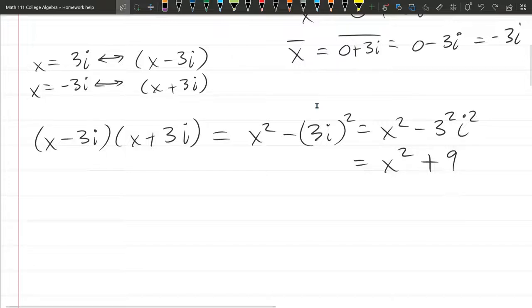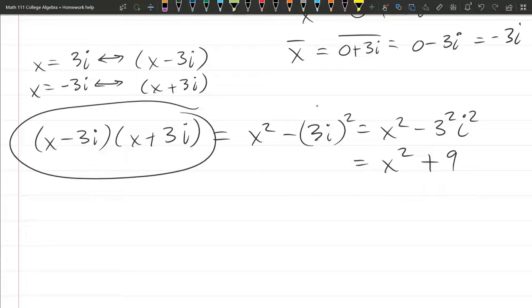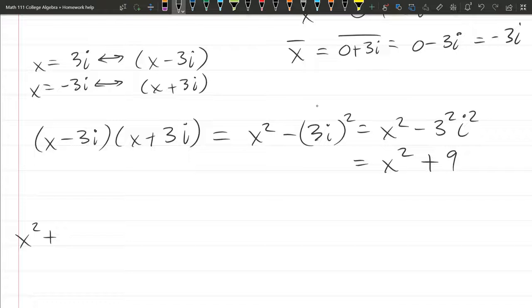This is a product of factors, which means it's also a factor of the polynomial, and I can divide by this. Now, normally you could just write x squared plus 9, but we want to include all powers of x.